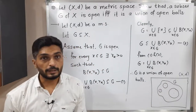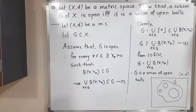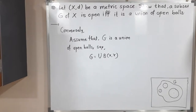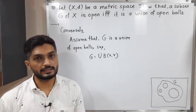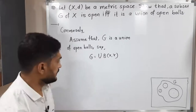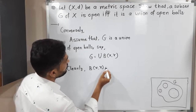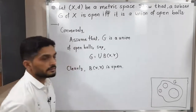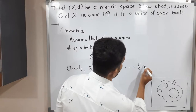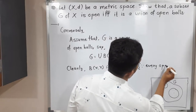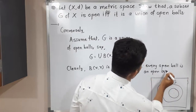Now we have to prove the converse. We will assume G is a union of open balls and prove that G is open. Conversely, we assume G equals the union of B(x, R) for x belonging to G. We have to prove that G is an open set. Clearly, we can write that B(x, R) is open — because we have already proved that every open ball is an open set.